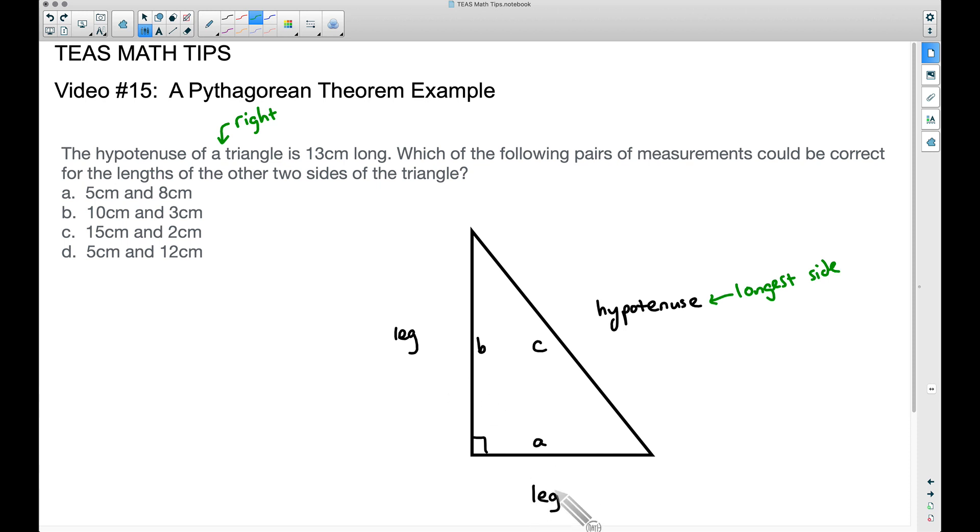With that in mind, we can automatically eliminate choice C because 15 centimeters. You cannot have a side, a leg, of a right triangle longer than the hypotenuse. And we're told the hypotenuse is 13 centimeters.